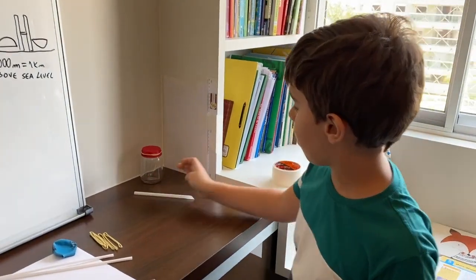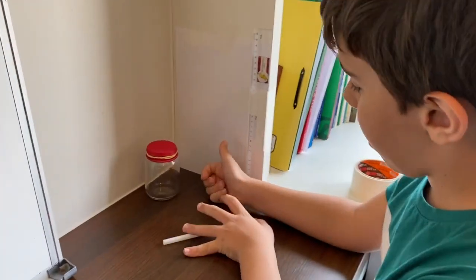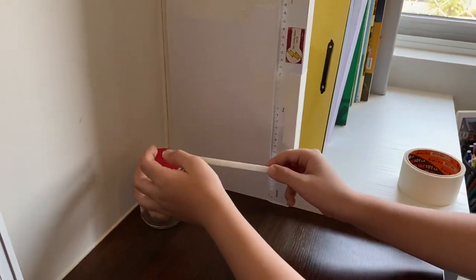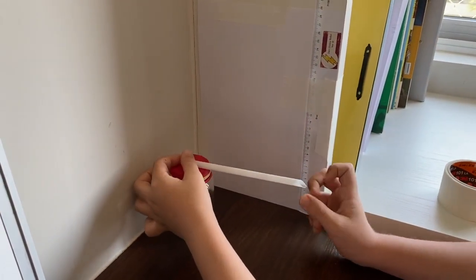So we already glued the paper and the ruler, and now we're going to glue the straw to our observation device.